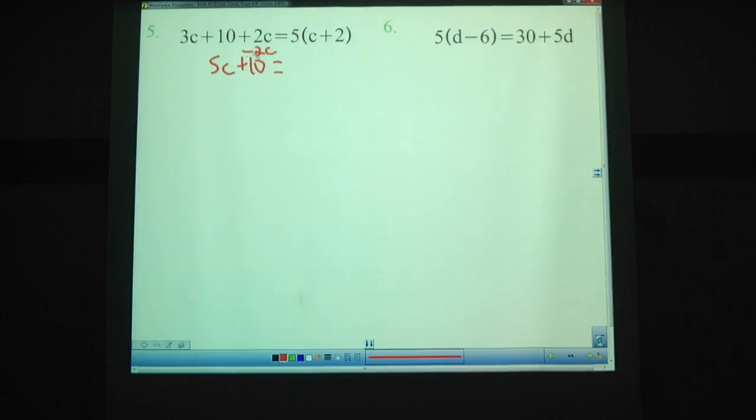Combine those c's together. 3c plus 2c is 5c, so 5c plus 10. Some of them want to subtract 2c from each side. That is wrong. That is twice from the same side. Here's the equal sign, twice on the same side, no good. You're much better off combining the 2c with the 3c, giving you a 5c. Over here, we have 5 times the quantity c plus 2. Multiply the 5 by the c: 5c. Multiply the 5 by the 2: 10. So 5c plus 10.